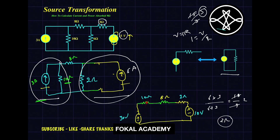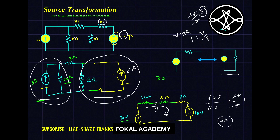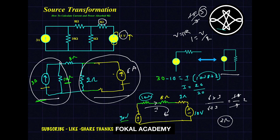Now we have a single loop. Applying KVL, assume current I flows in the loop. The 30 volt source drives the current, and the 10 volt source opposes it, so it is taken as minus 10. This gives: 30 − 10 = I × (10 + 8 + 2). Therefore I = 20/20 = 1 ampere. So 1 ampere is passing through the 8 ohm resistor.